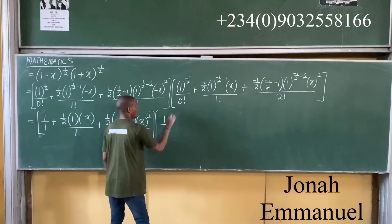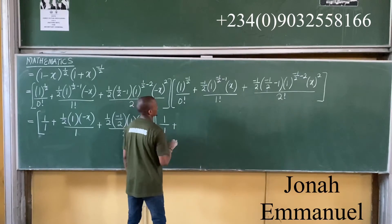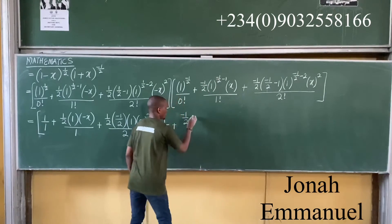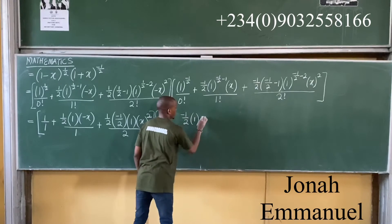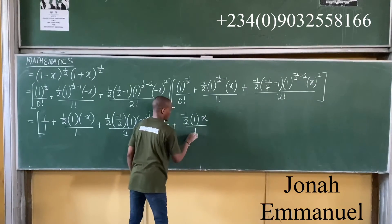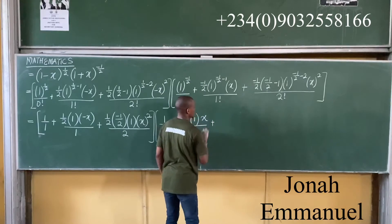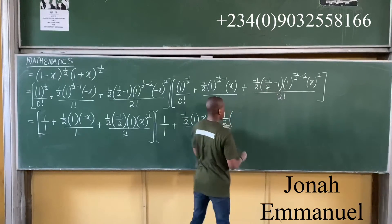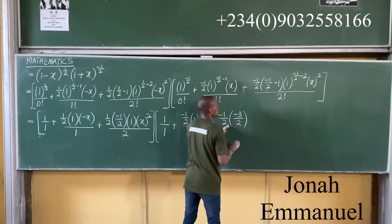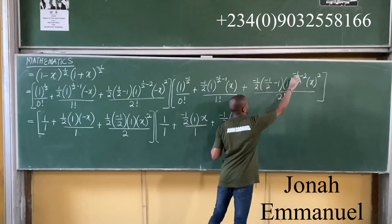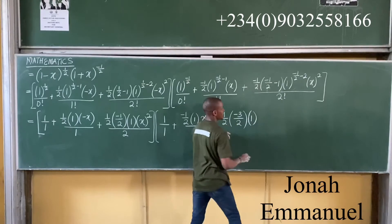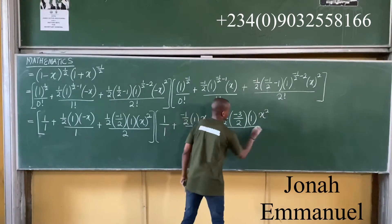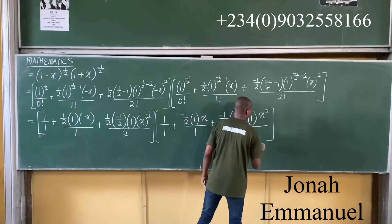For the second expansion with n = minus 1 over 2: the first term is 1 all over 0 factorial giving 1. Plus: minus 1 over 2 times 1 times x, all over 1 factorial — giving minus x over 2. Plus: minus 1 over 2 times (minus 1 over 2 minus 1 = minus 3 over 2) times 1 times x squared, all over 2 factorial — giving 3x squared over 8. So the second bracket expands to 1 minus x over 2 plus 3x squared over 8.